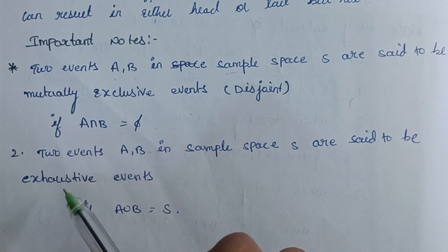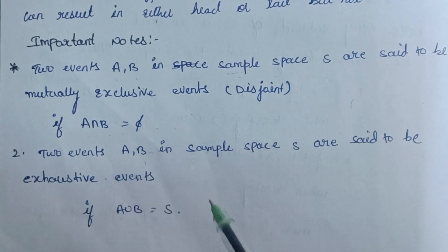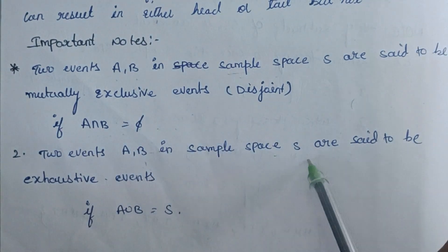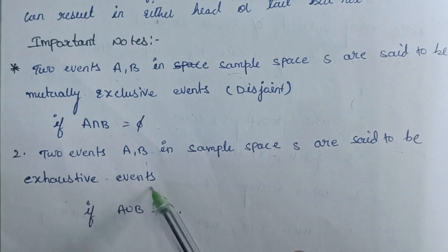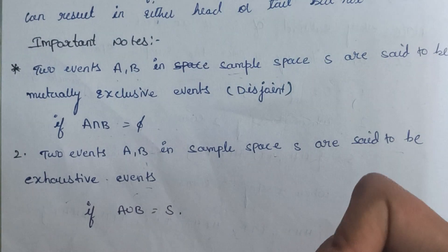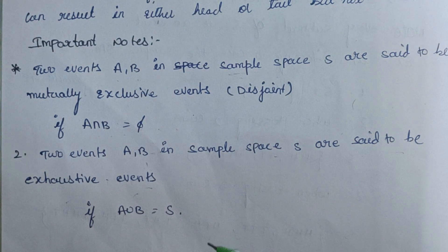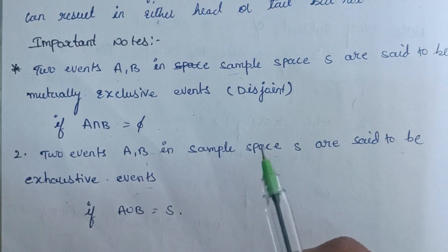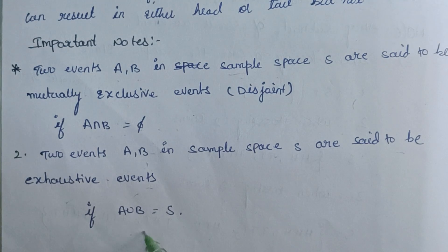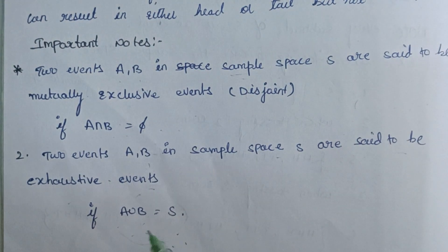Next, we have two events A and B in a sample space. They are said to be exhaustive events. Exhaustive events name all possible events in a trial. A and B are called exhaustive events if A union B is equal to the sample space S.